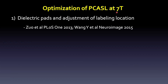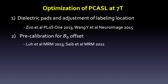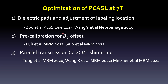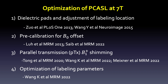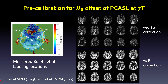In terms of optimization of PASL at 7T, there have been several approaches. First is dielectric pads to extend B1 field and adjustment of labeling location. They use pre-calibration of B0 offset, and parallel transmission PTX B1 shimming to improve the B1 field, as well as optimization of labeling parameters. Here is the work by Dr. Weiming Lu and Dr. Laleh Alizadeh-Taheri's group at NIH. Here's the field map of field inhomogeneity at the three major feeding arteries — they use gradients to compensate for the phase offset. This is without B0 correction, and this is with B0 correction.